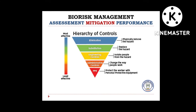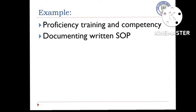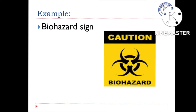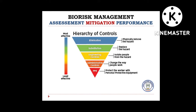The fourth measure is administrative controls, which refers to the policies, standards, and guidelines used to control risk. Examples include proficiency and competency training for laboratory staff, displaying biohazard or warning signages, markings, and labels, controlling visitor and worker access, and documenting written standard operating procedures. Practices and procedures of administrative controls also comprise minimizing splashes, sprays, and aerosols to avoid laboratory-acquired infections, and following standard operating procedures.